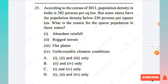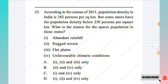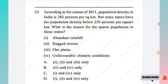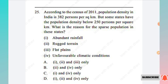Question 25: According to the Census of 2011, population density in India is 382 per square kilometer, but some states have population density below 250 per square kilometer. What is the reason for sparse population in these states? Options: abundant rainfall, rugged terrain, flat plains, unfavorable climatic condition. The answer is rugged terrain and unfavorable climatic conditions, Option A.